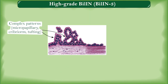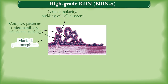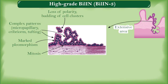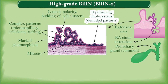High-grade BilIN is characterized by more complex patterns such as micropapillary, papillary, cribriform, or tufting. There is complete loss of nuclear polarity and budding of cell clusters into the lumen, markedly pleomorphic nuclei, atypical mitoses, and involvement of relatively extensive areas. Peribiliary gland involvement is common, and high-grade BilIN may extend to involve Rokitansky-Aschoff sinuses — one must not confuse this for invasion. High-grade BilIN arising in the setting of hyalinizing cholecystitis may demonstrate fewer atypical cells clinging to the stroma, mimicking a denuded pattern.